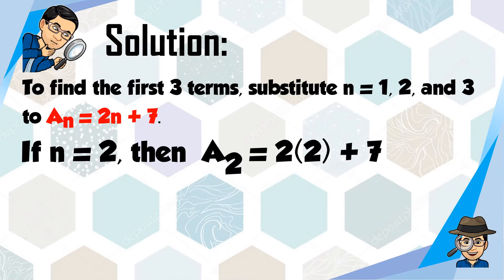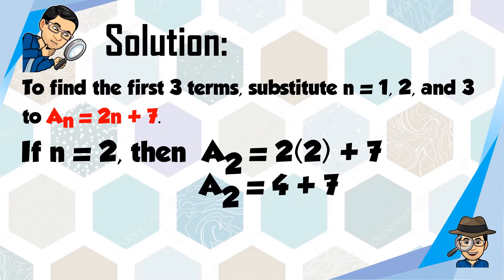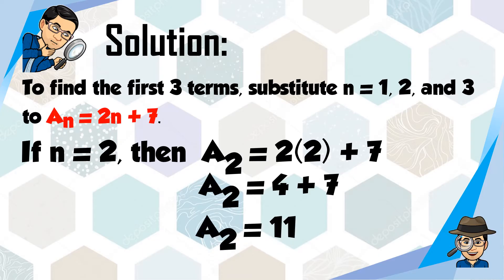Next, if n is equal to 2, then a sub 2 is equal to 2 times 2 plus 7. What is 2 times 2? That is 4. And then 4 plus 7 is 11. Therefore, the second term of the given n-th term is 11.